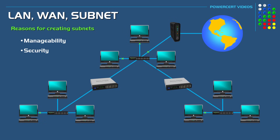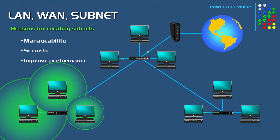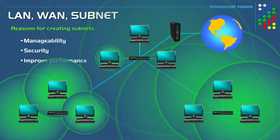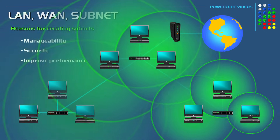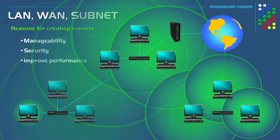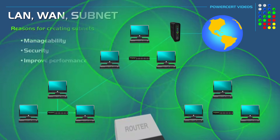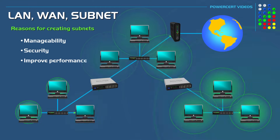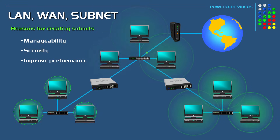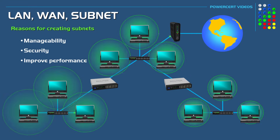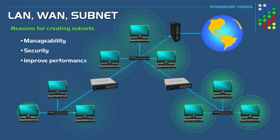Another reason for creating subnets is to improve the performance of a network by controlling broadcast traffic. When a computer wants to communicate with other computers on a network, it sends out a broadcast to every computer on the network, so every computer can hear the broadcast traffic from every other computer. But by breaking down a network into smaller subnets — which is known as subnetting — the broadcasts are only heard by other computers on the same subnet, therefore limiting the amount of broadcast traffic.